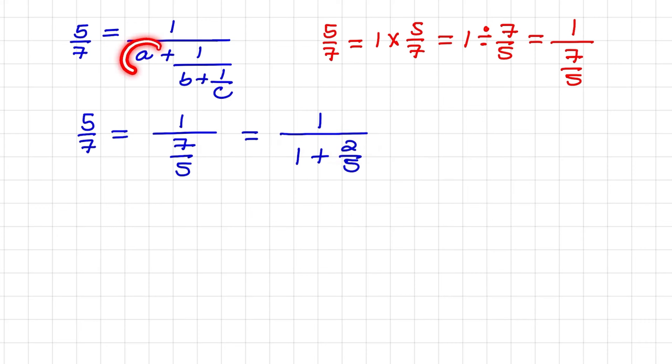Now notice we have the value of A, which will be equal to 1. That means that 1 over B plus 1 over C is equal to 2 over 5.